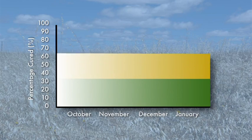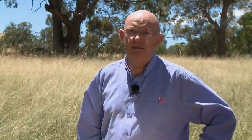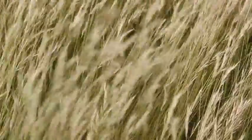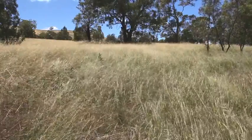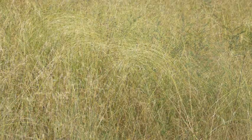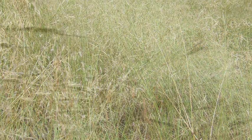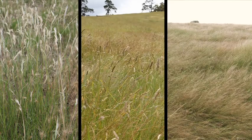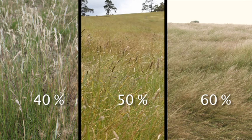Now let's look at the yellow phase. This is when the curing is between 40 and 60 percent. Here is an example of 40 percent cured where the yellowing is well underway. Here is an example of grass at 60 percent cured — as you can see, half the stems have lost some of their seed. Grass at 50 percent cured is about half yellow, half green and is continuing to drop seed. Here are some images of fields with grass at 40, 50 and 60 percent cured.